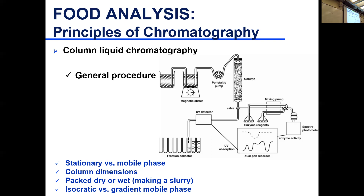Increasing the strength saves time. As an analyst, you always want to be most efficient — you want separation but in the shortest time possible. A run that takes an hour and a half isocratically can sometimes be shortened to 30-45 minutes with a gradient. However, if two compounds are very similar in characteristics, you may need isocratic — if you increase the strength too much, both compounds move out very fast and you lose separation.